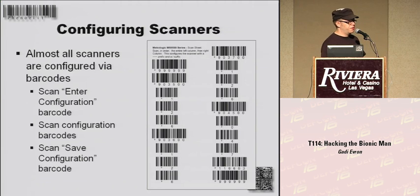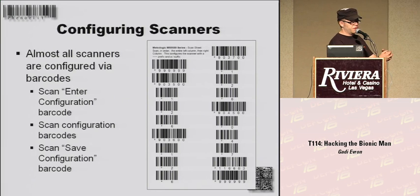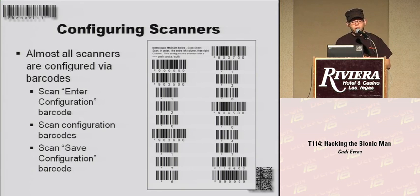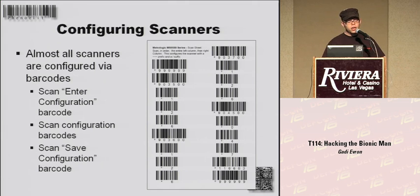Now we're coming to the first interesting thing: the scanners. The scanners that face outside to a potentially hostile barcode are actually configured by barcodes. The one side faces an attacker, and the other is connected to a computer — and you actually configure it from the attacker side, which is really stupid. What happens is: you have a special enter-configuration-mode barcode that ships with every scanner. You scan that, it goes into config mode, then you scan other barcodes that change the configuration — like the output character set to Japanese — then you scan an end-of-configuration barcode and it saves to the scanner.